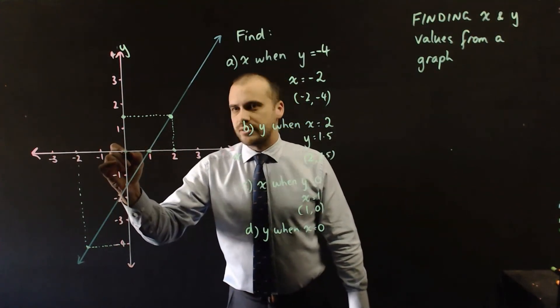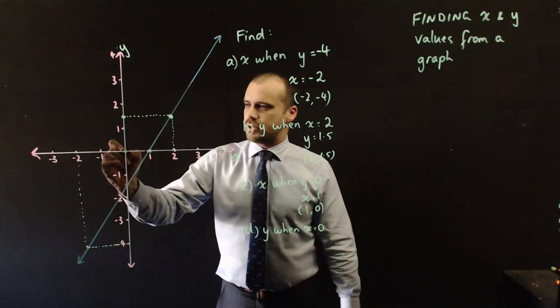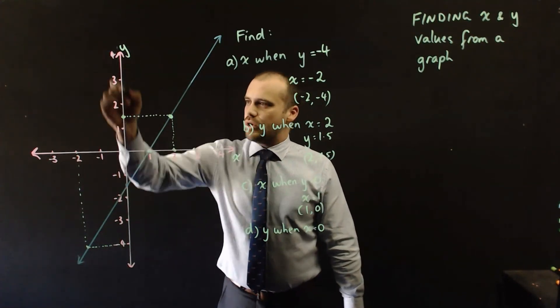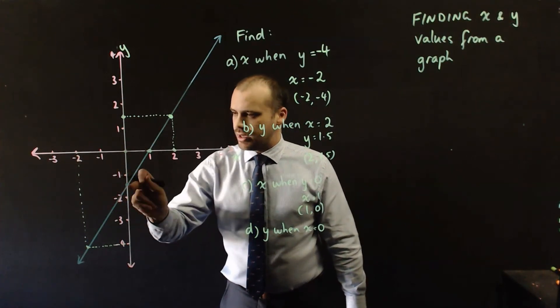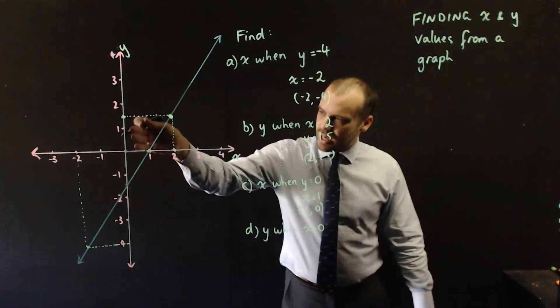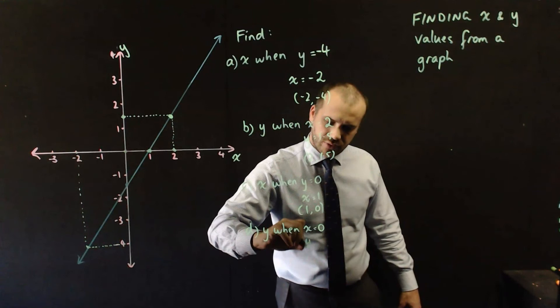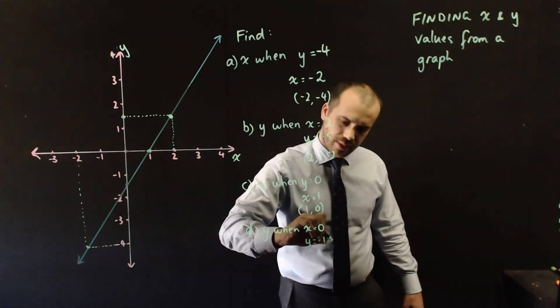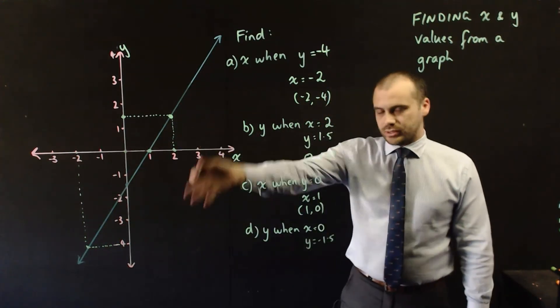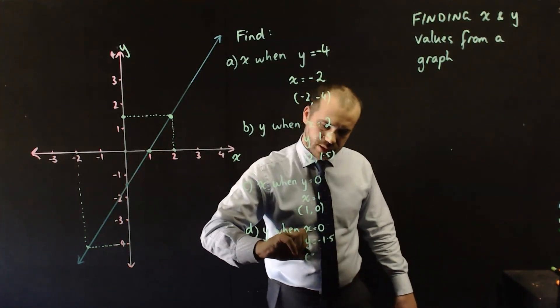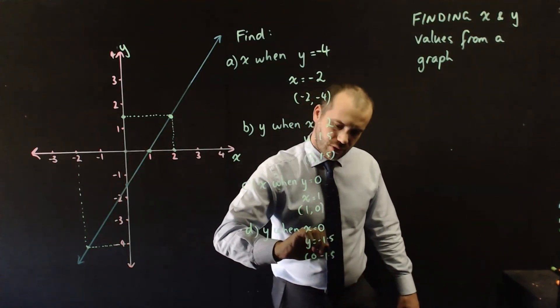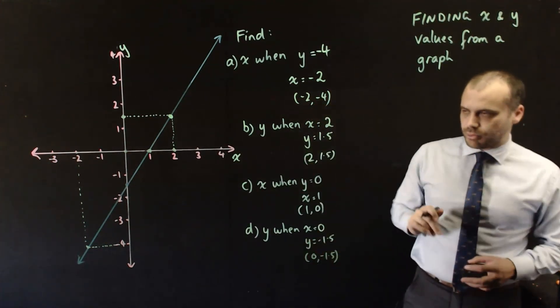But this time we're trying to find out what y is equal to. So now we need to move along the y axis until we hit... And it's right there. Which looks like negative 1.5. Which means that that point on our linear graph here is 0, negative 1.5.